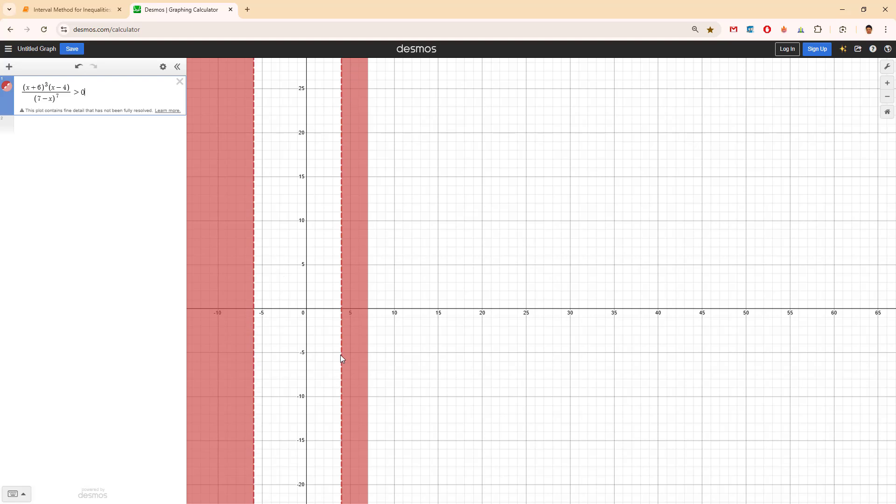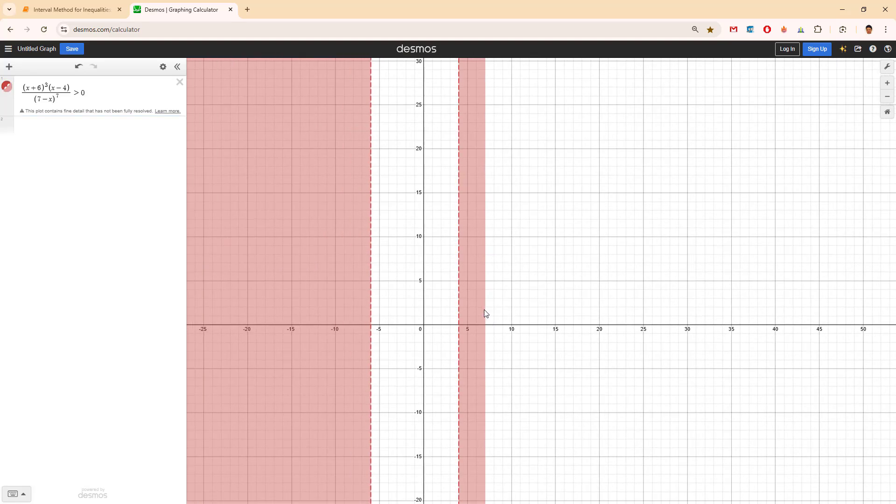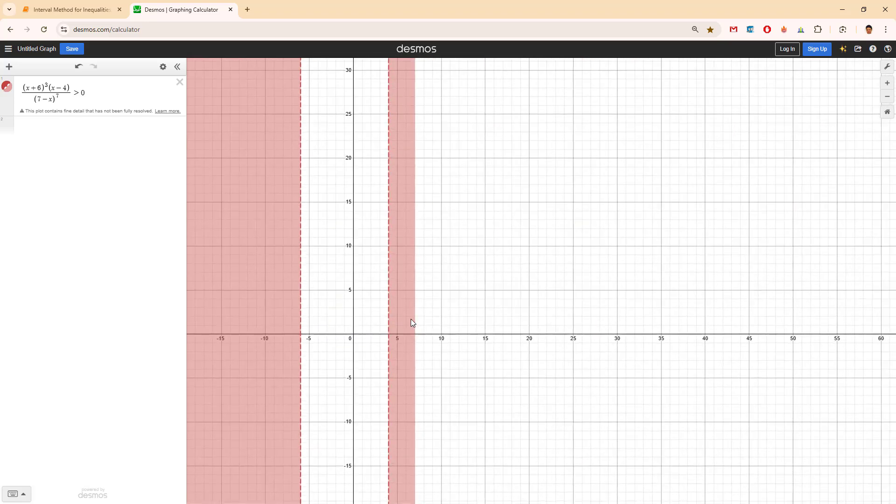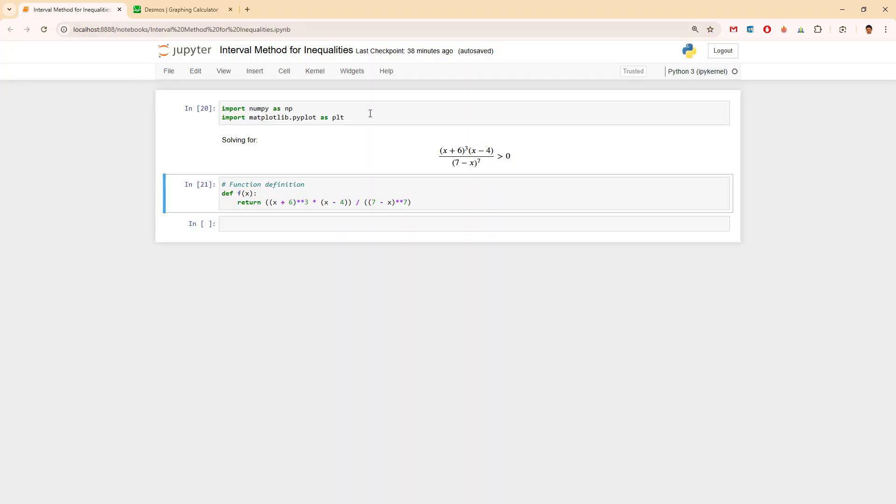Then we have from 4 to 7, the same. And if we go, it covers. Let's take a look at something else. Let's take a look at plotting this function here. Here we have the function definition in matplotlib.